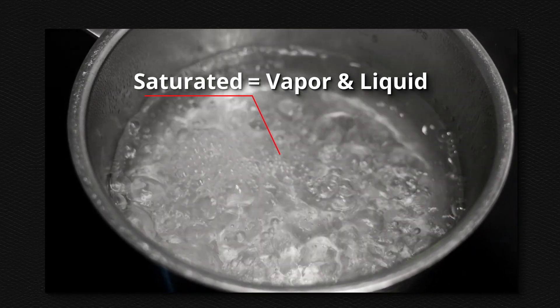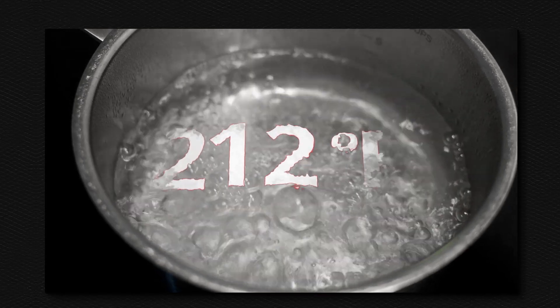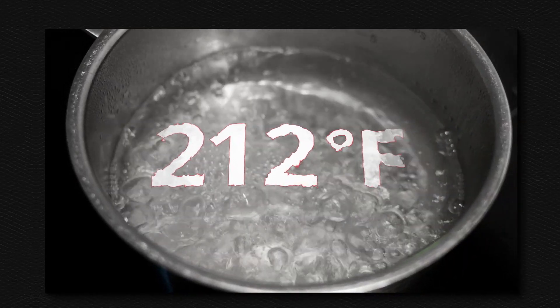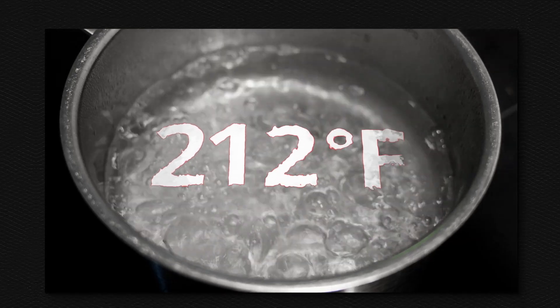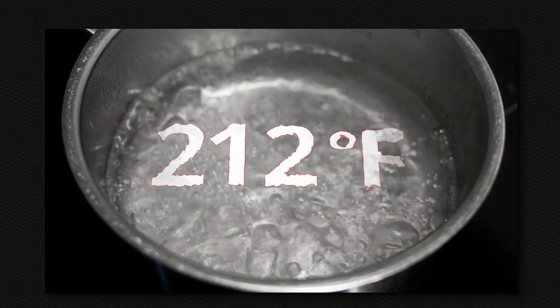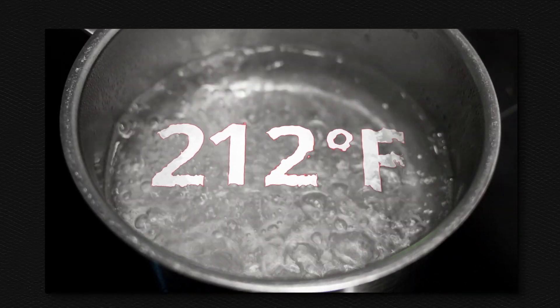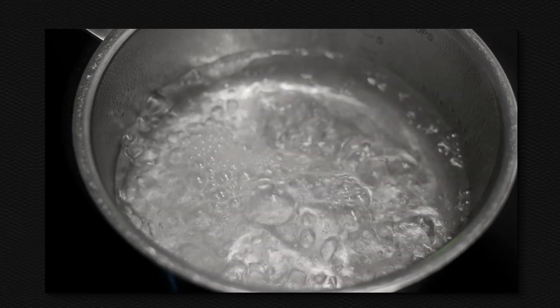As more heat is added, the water remains at the boiling point of 212 degrees Fahrenheit. The temperature of the water will not be above 212 degrees Fahrenheit while it is saturated. This is an example of what is happening inside the evaporator.